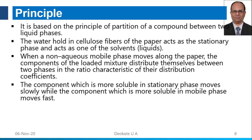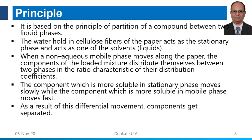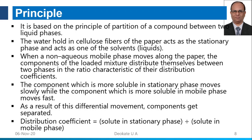The component more soluble in the stationary phase moves slowly, while the component more soluble in the mobile phase moves fast. The component should spend sufficient time with the stationary phase for efficient separation. As a result of differential movement, components get separated onto the paper. We measure the distribution coefficient — the ratio of solute in the stationary phase to solute in the mobile phase.